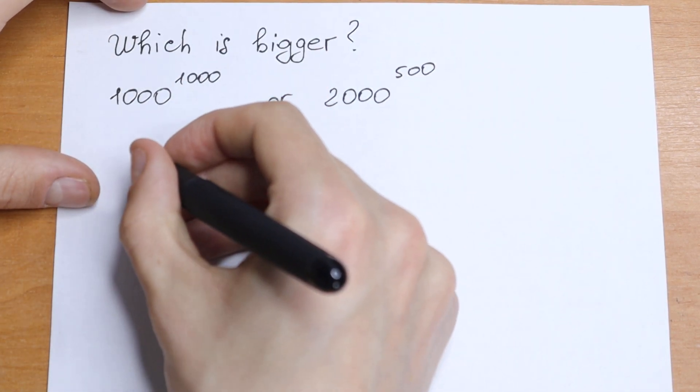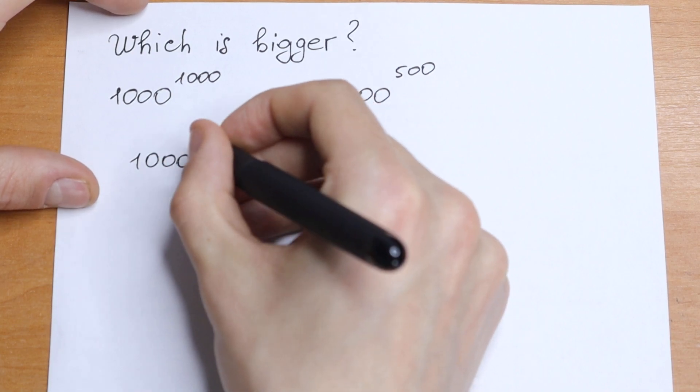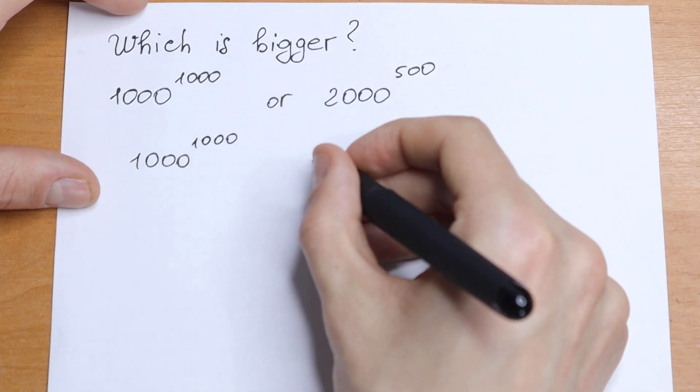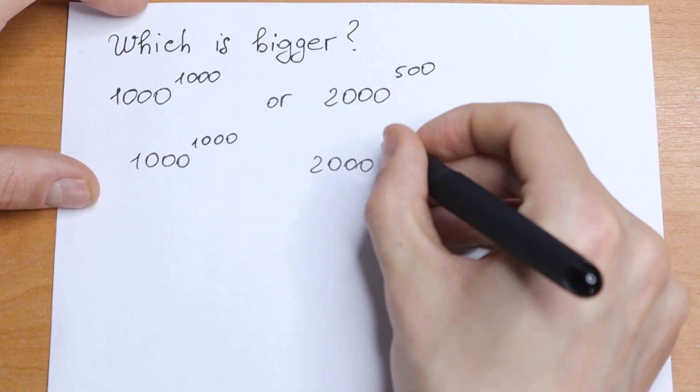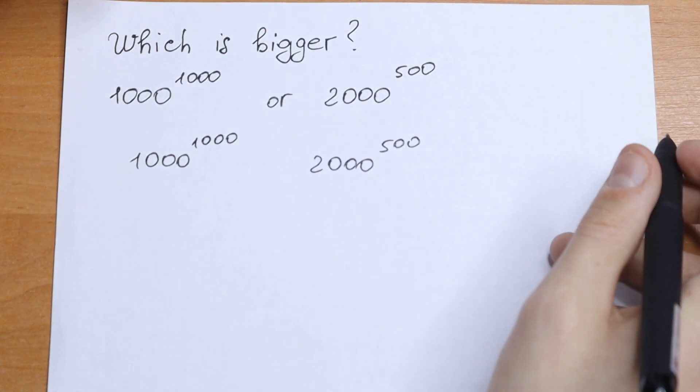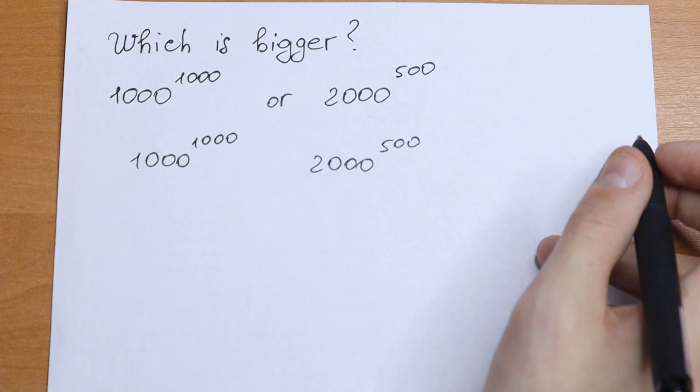Take a look what we will have. We have 1000 to the power of 1000 on the left, and on the right we will have 2000 to the power of 500. And let's take the 500th root from both of the sides.